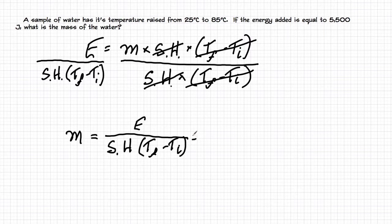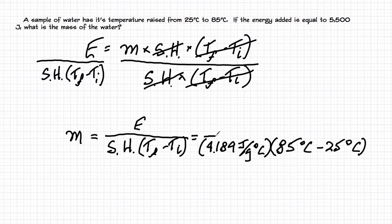So now what I need to do is to plug in my numbers. And I'll go ahead and put in the specific heat first. And again, I don't give it to you in this problem because I kind of expect you'll be able to look it up. But this is water, so the specific heat is 4.189, and that's joules per gram degrees Celsius. And the change in temperature is from 85 degrees Celsius minus 25 degrees Celsius. And upstairs we're going to go ahead and put the energy. And the energy is 5,500. And that's in joules.